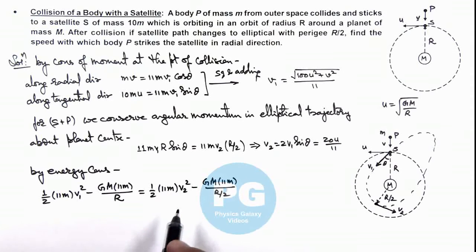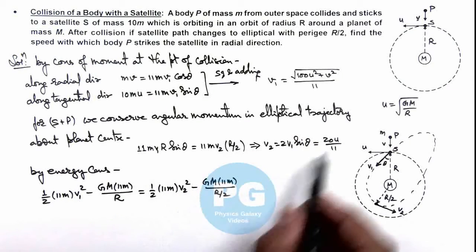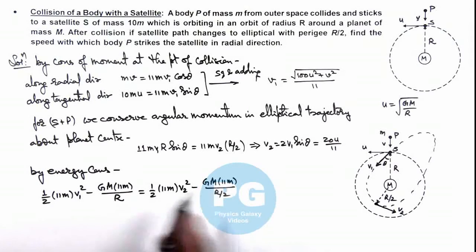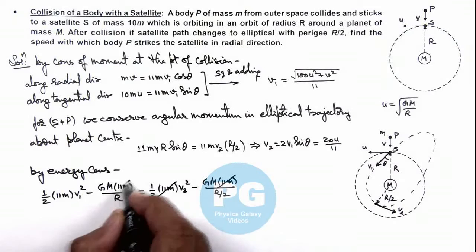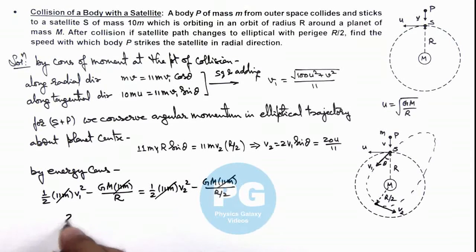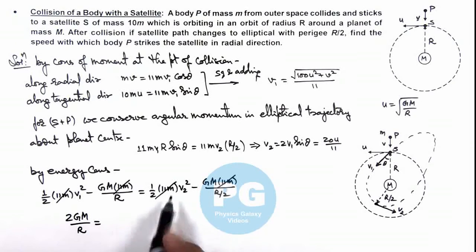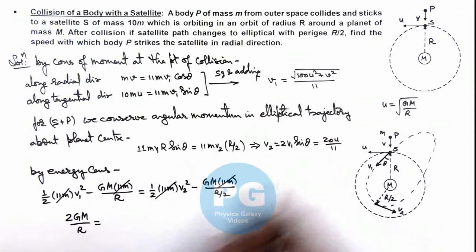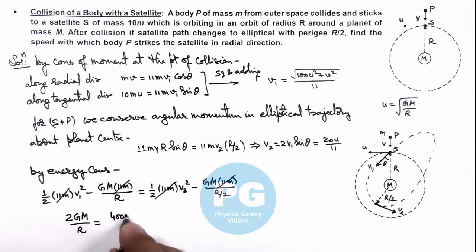Now if we simplify this relation, we can substitute the value of v1 from here and v2 from here. You can see what we are getting: taking this GM 11m by R on the other side, first we can cancel 11m from the equation. This gives 2 GM by R equals, taking this on the left hand side and substituting the value of v1 and v2, the values we are getting as 400 u squared by 121 minus 100 u squared by 121 minus v squared by 121.